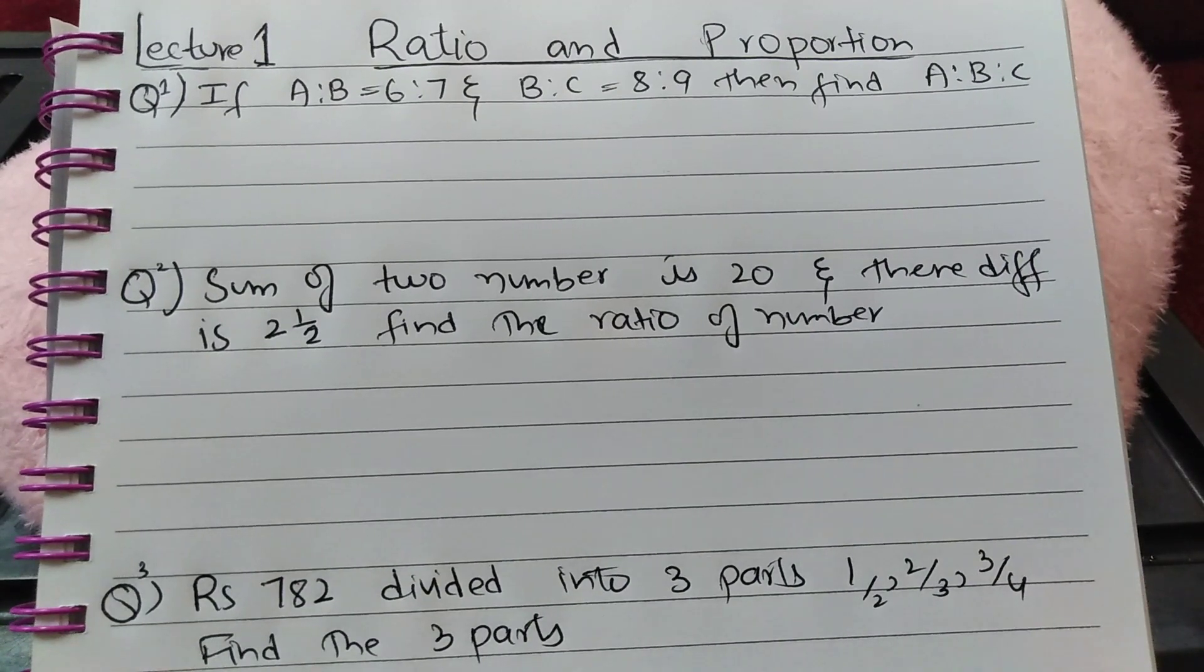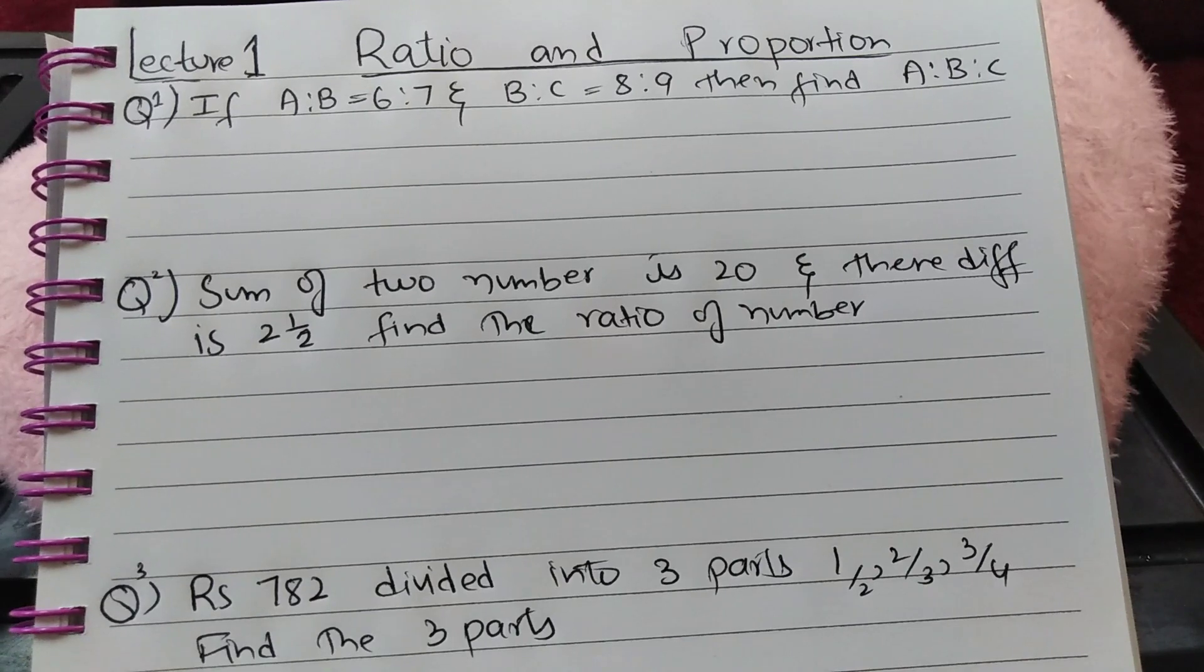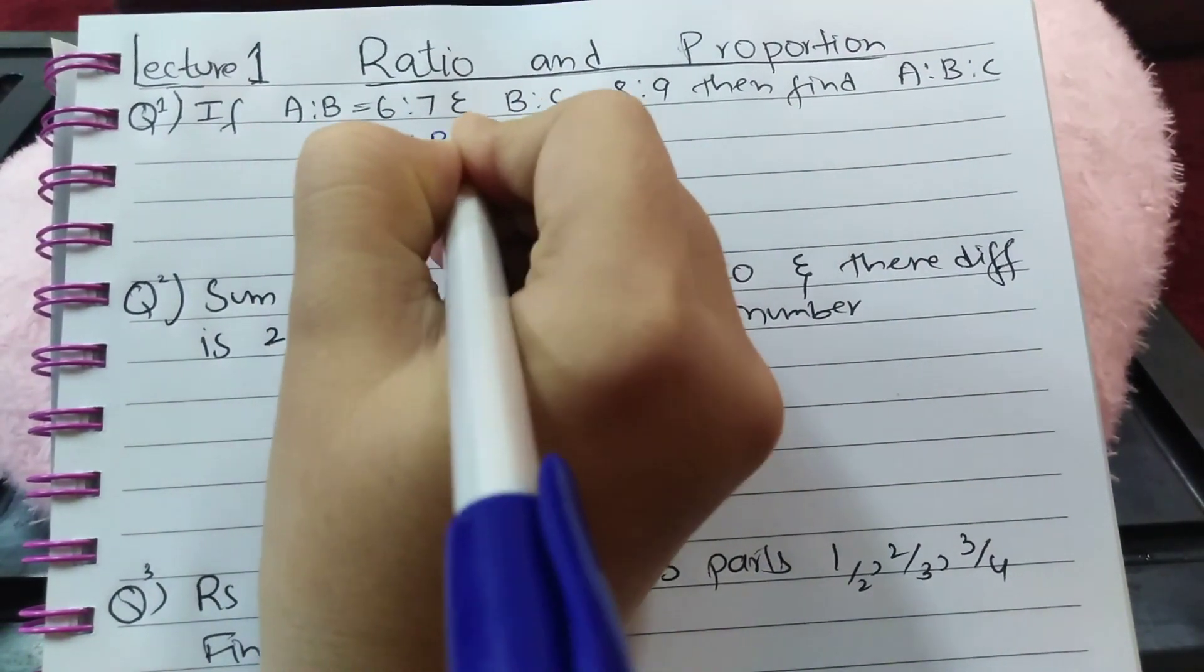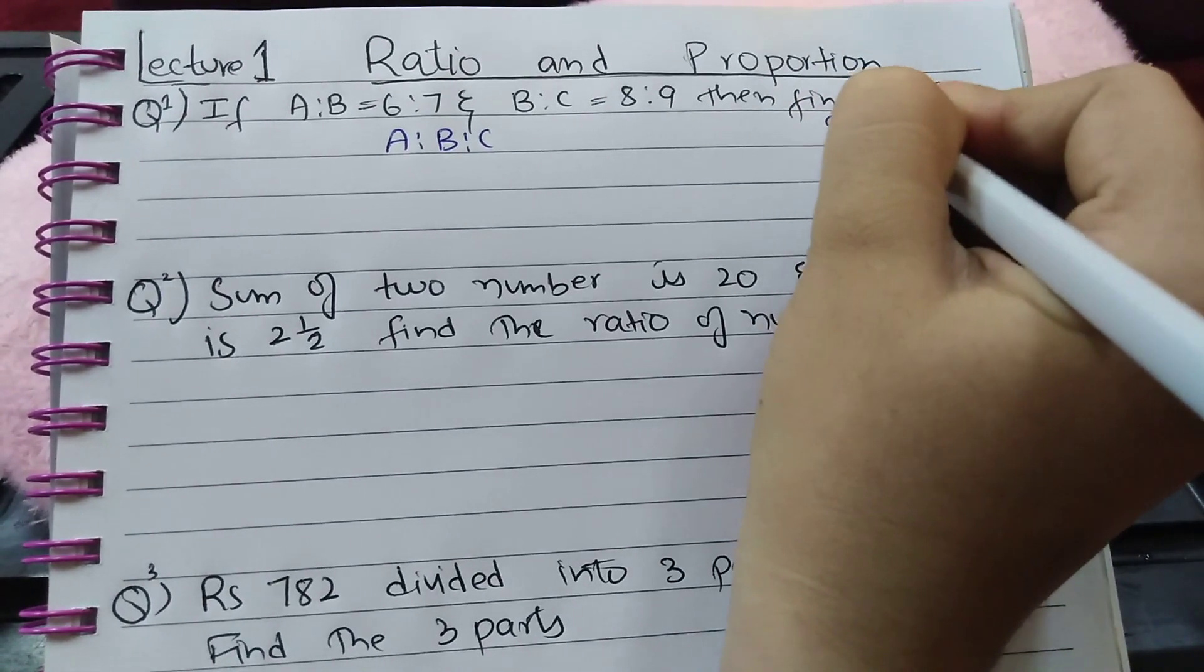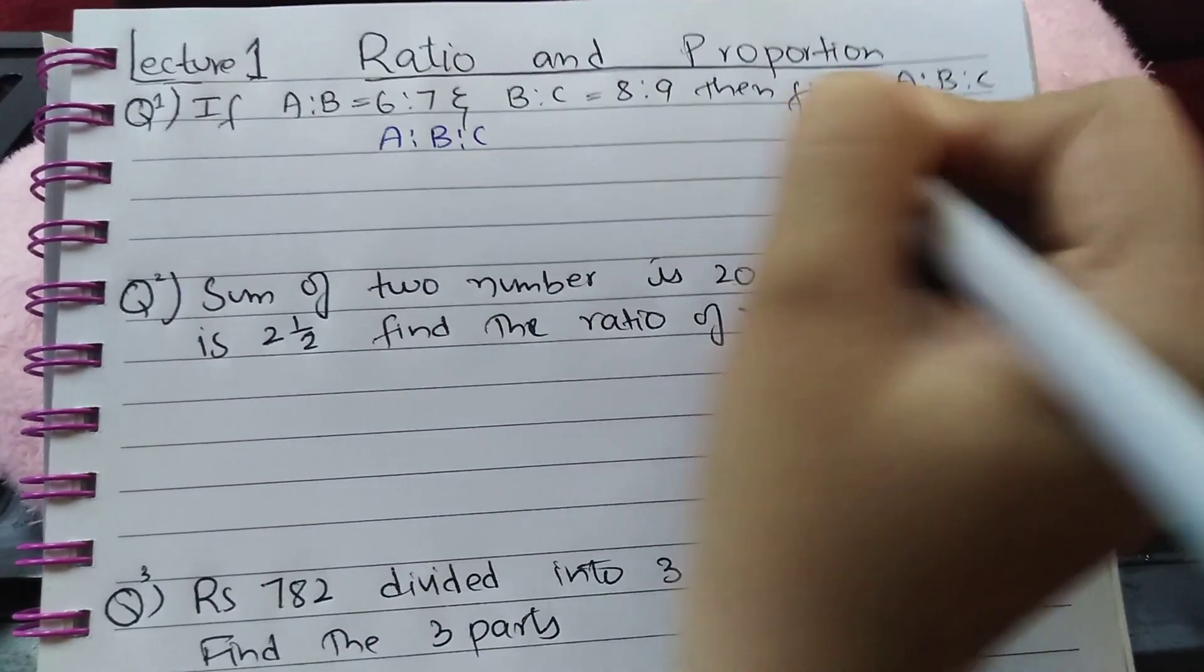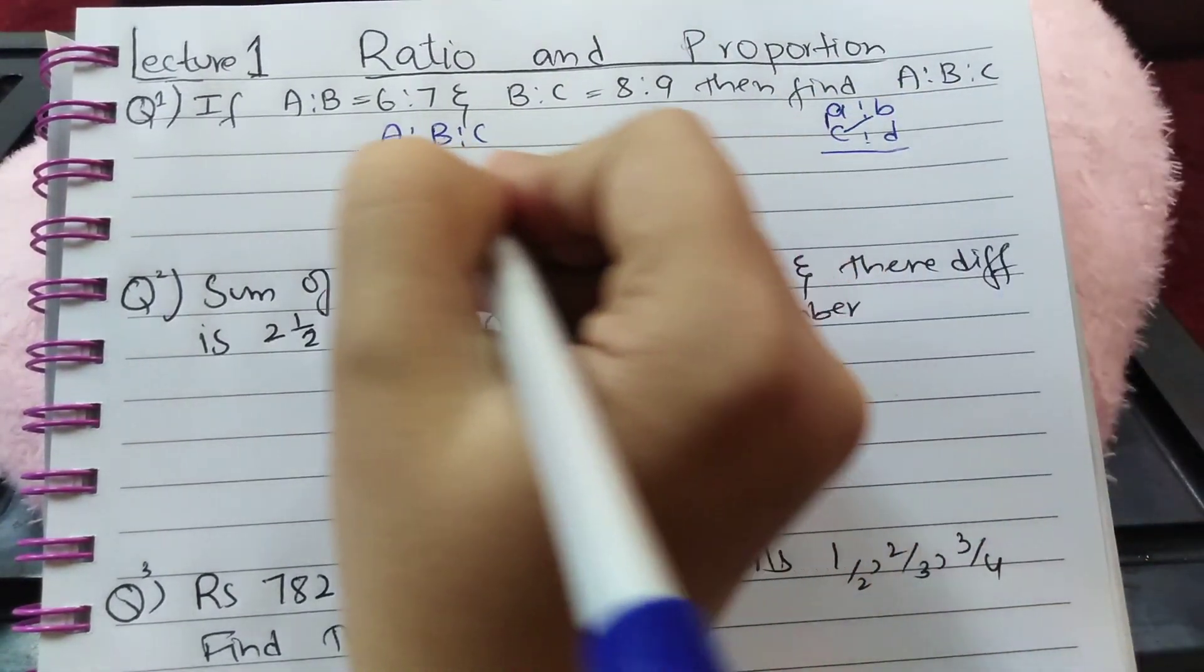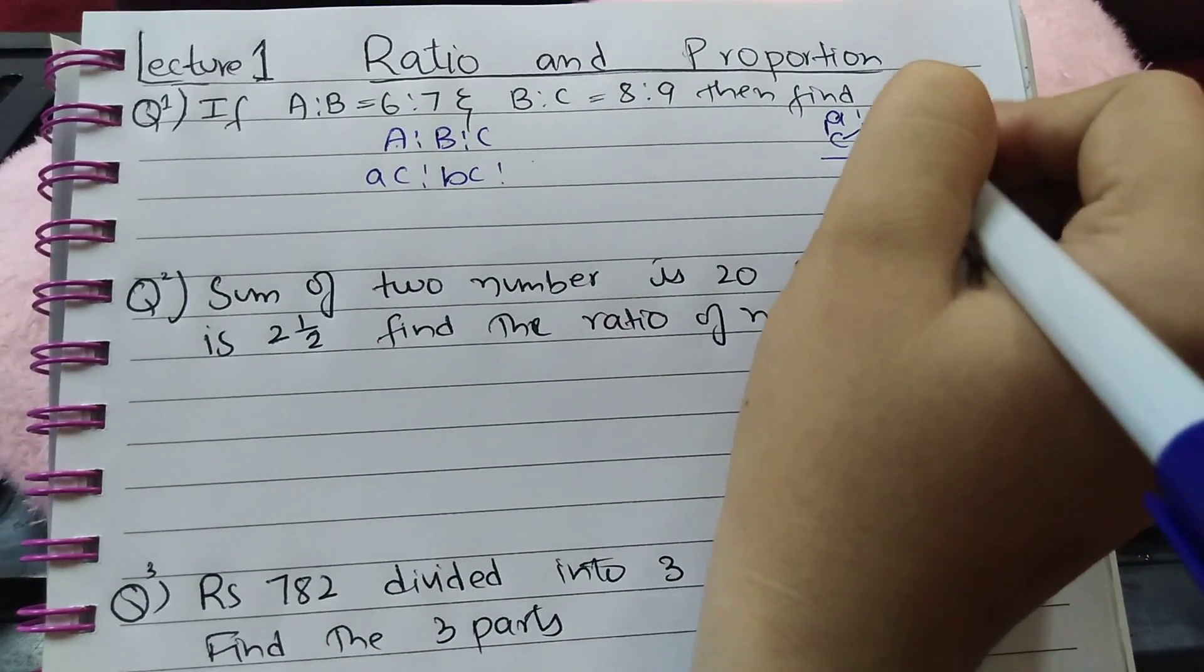Question number 1: If A:B = 6:7 and B:C = 8:9, find A:B:C. The shortcut for this type of question is to write A:B and C:D. To find A, multiply A with C. To find B, multiply B with C. To find C, multiply B with D.